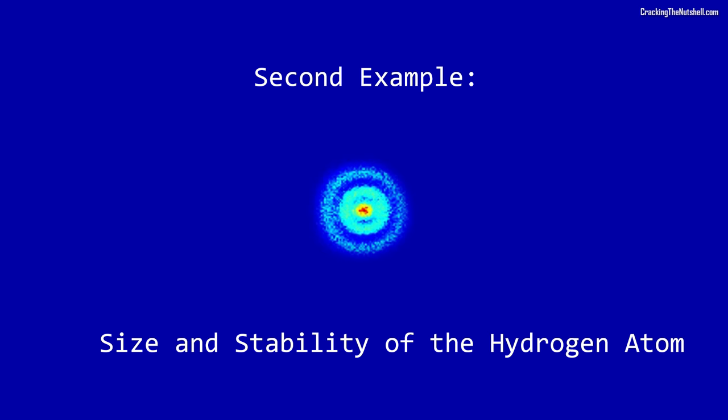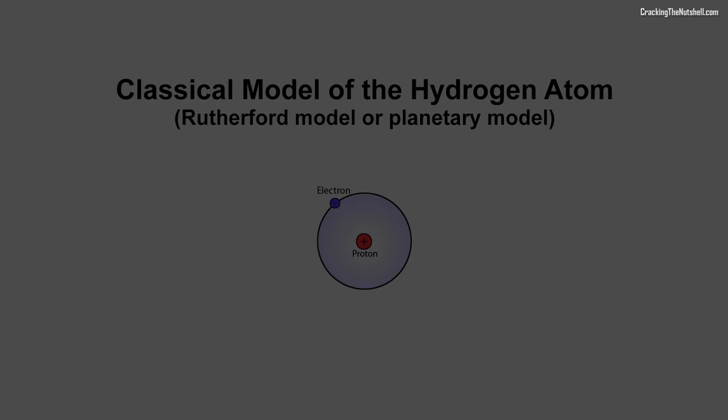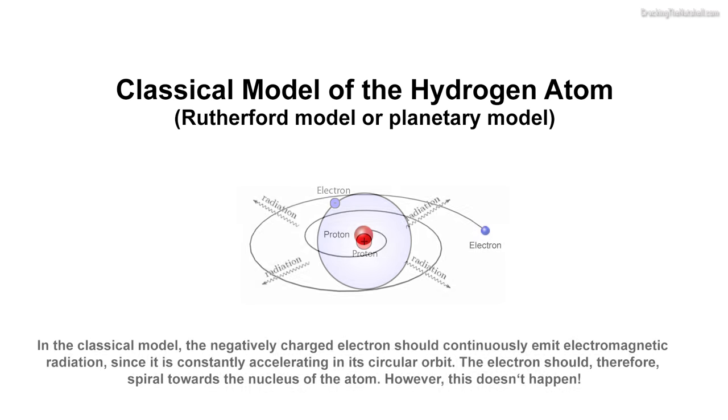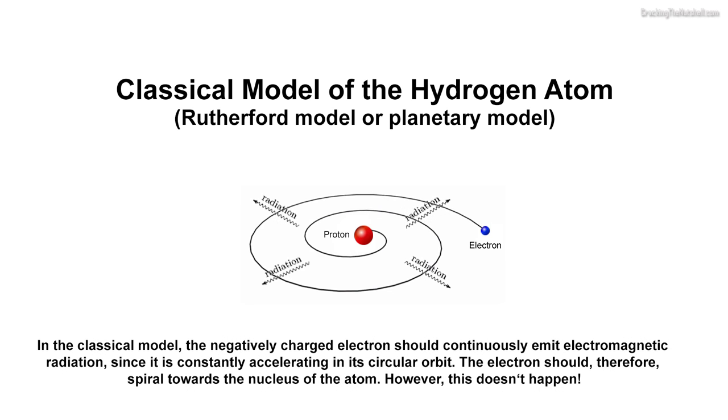Here is another interesting example. Heisenberg's uncertainty principle not only helps to predict the approximate size of the hydrogen atom, but it also explains why atoms are stable. According to classical ideas based exclusively on Maxwell's equations of electromagnetism, the negatively charged electron should continuously emit electromagnetic radiation, since it is constantly accelerating in its circular orbit. The electron should, therefore, spiral towards the nucleus of the atom.